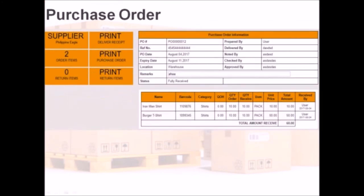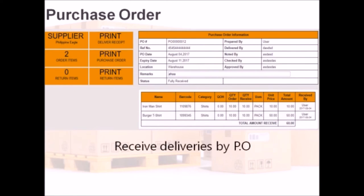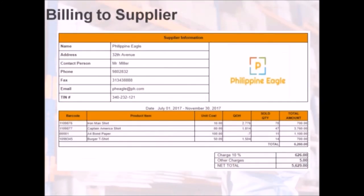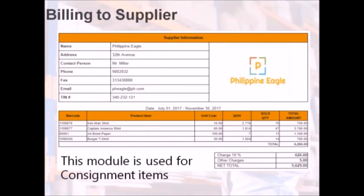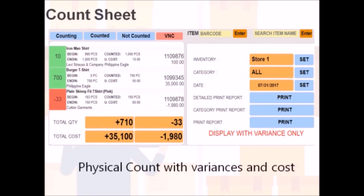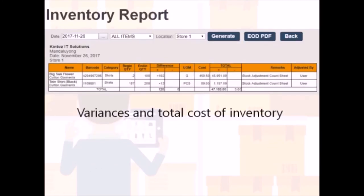In purchase order, we can restock our inventory by tracking orders from the supplier. Your quantity on hand is automatically updated as you receive items in the purchase order. Regarding consignment items, here's an example of the billing report generated. The count sheet displays items counted and not yet counted. More details are shown as you count, including variances as well as cost.